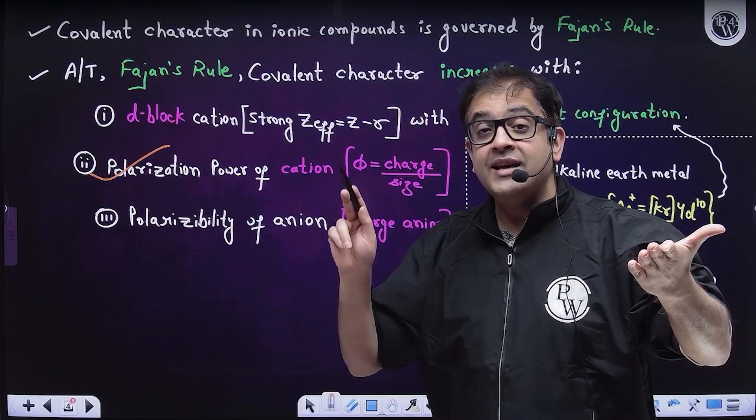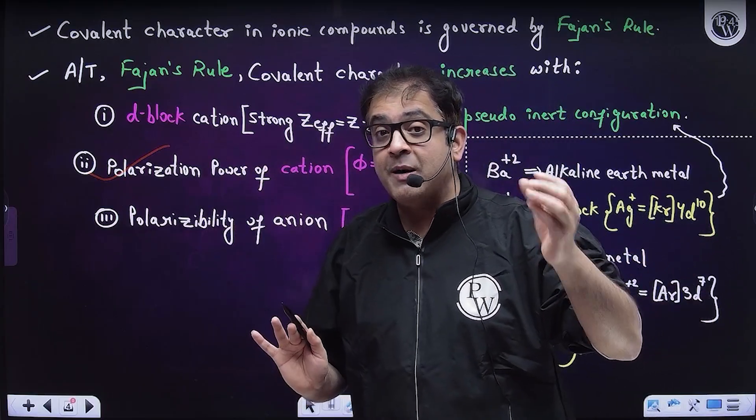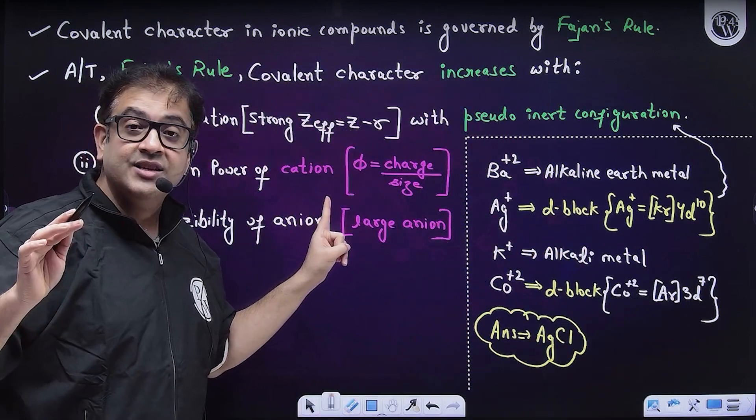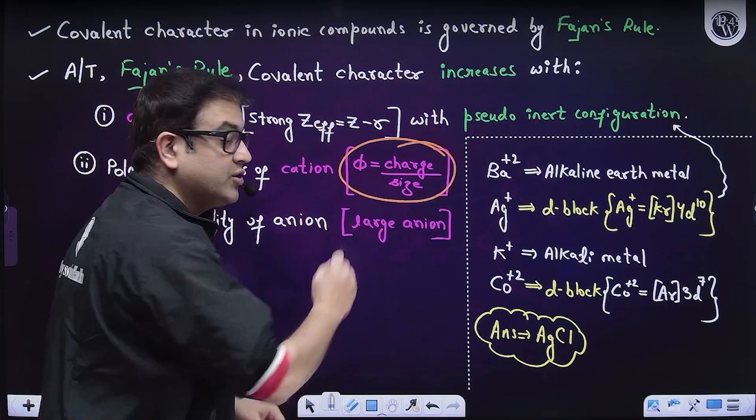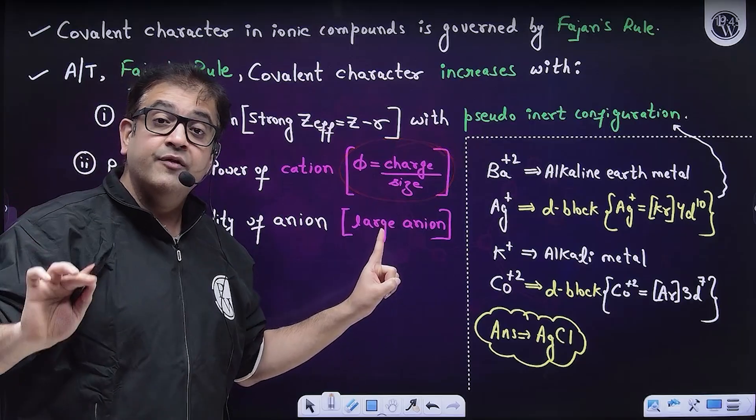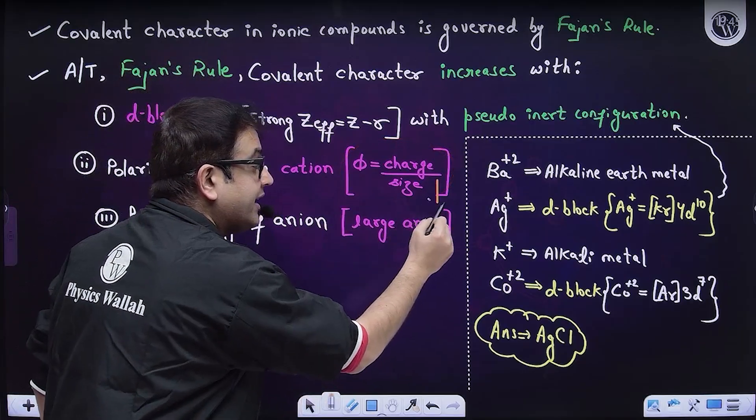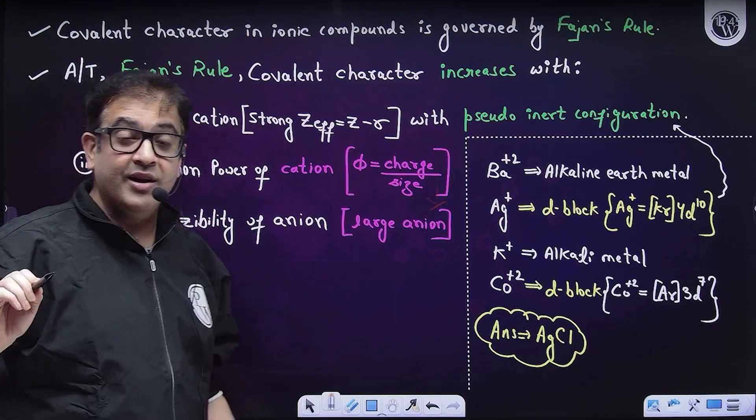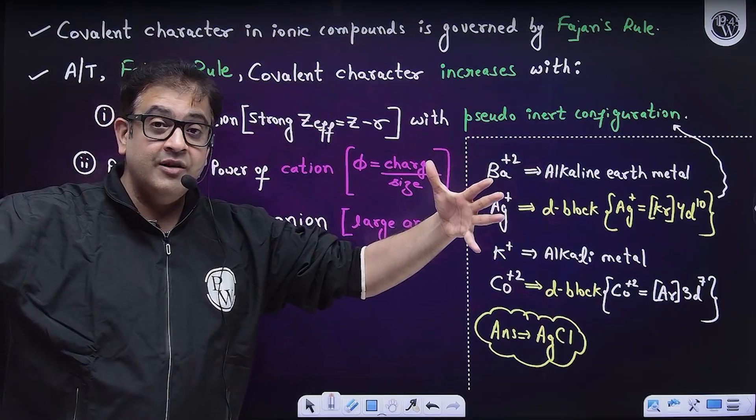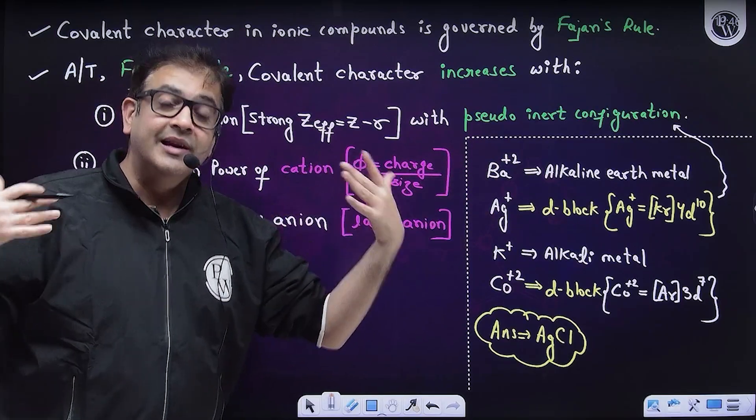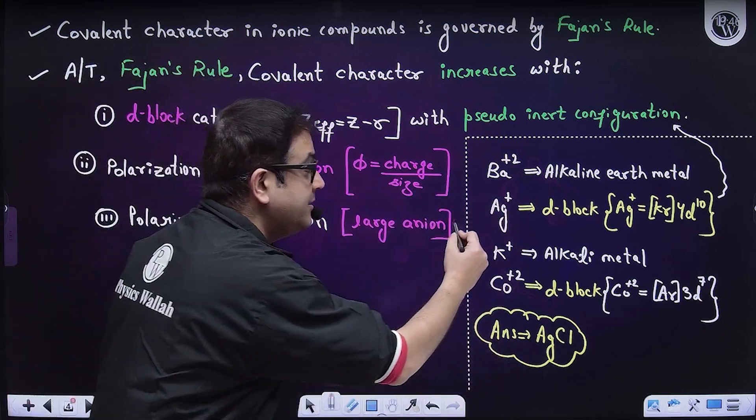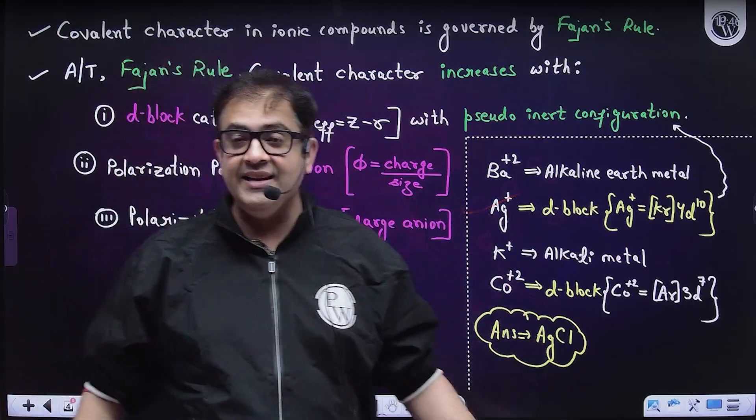D-block cations have very high polarization power of cation because shielding of these D and F electrons are very poor. For S-block or P-block element cations, polarization power is calculated using their charge density, which is ratio of charge upon size. First we give priority to charge, and if charge is equal, then smaller cation will have high polarization power. Among the given options, Ag+ will be the salt having highest covalent nature.